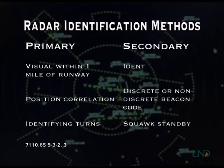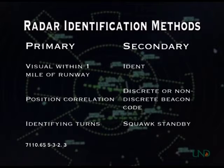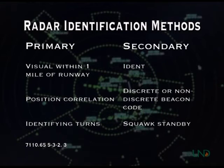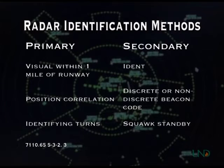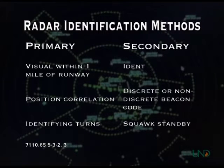There are six methods that can be used to radar identify a target. These six methods are divided into two groups: three methods are used for primary-only targets, and three are used for targets displaying secondary information. We'll begin with the primary radar identification methods.